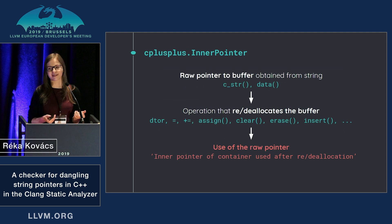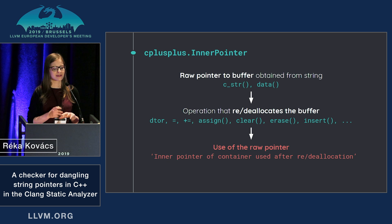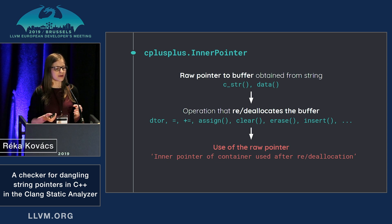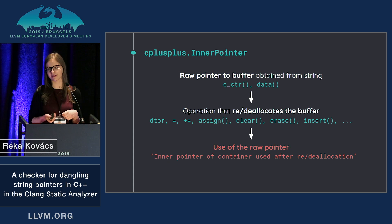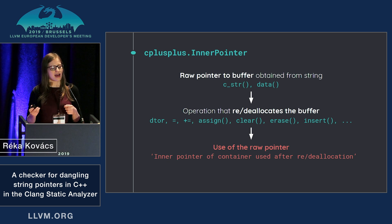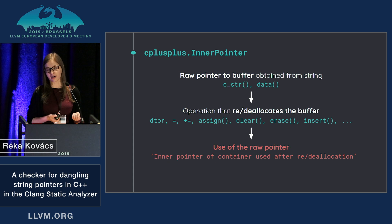The name of the checker is inner pointer, and it's in a C++ package. To give a quick overview of the main logic, it is kind of an API matching checker. First, it looks for code that obtains a raw pointer to the buffer of the string. Then it looks for some operation that potentially re-allocates the buffer, thus invalidating the raw pointer. And then, if after this we see a use of that raw pointer, we give a warning.